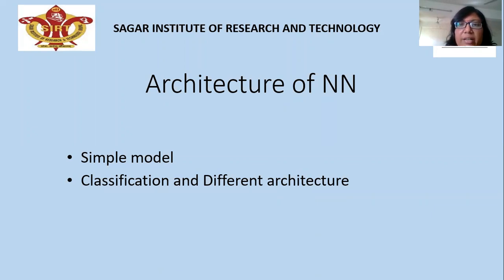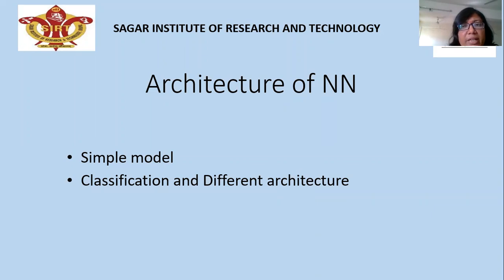Today's topic is the architecture of neural networks. Architecture means the different designs of the neural network model. The model of the neural network can be of many designs. First we learn about the simple model, then we learn about the classification of different architectures.